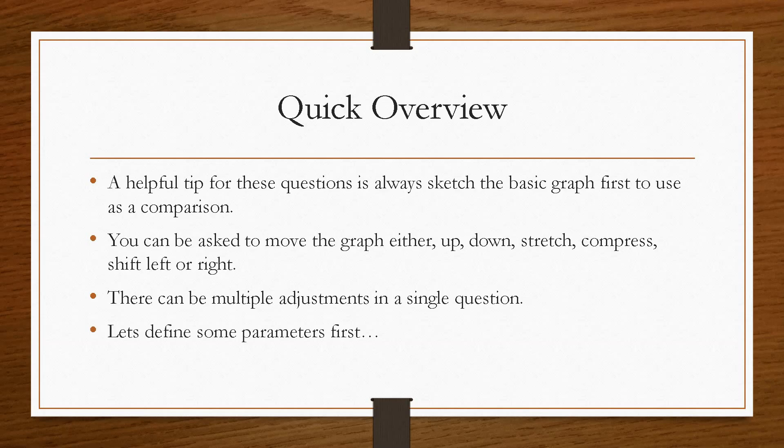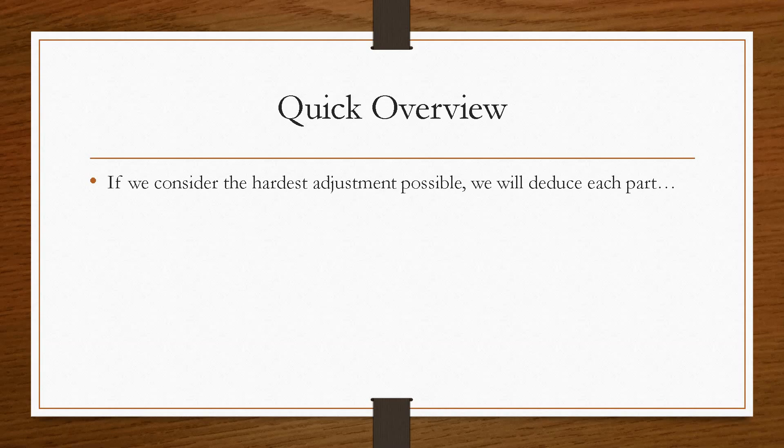So before we look at an example, let's have a look at the parameters first. So we will consider the hardest adjustment. So it would look something like this: y equals 2 sine brackets 2x plus 30 degrees close the brackets plus 1. Now this will manipulate every possible scenario that we mentioned before.